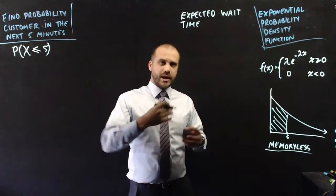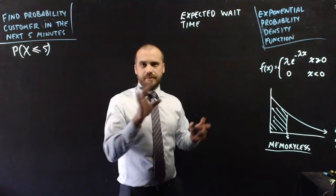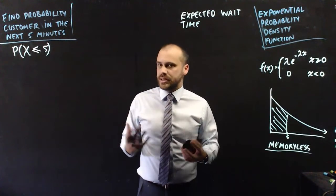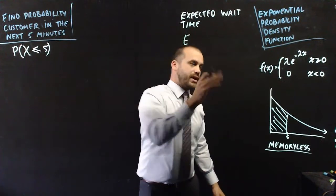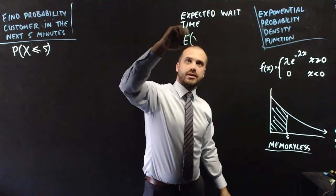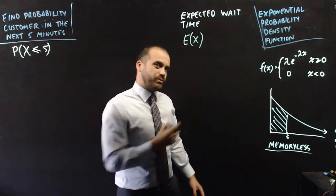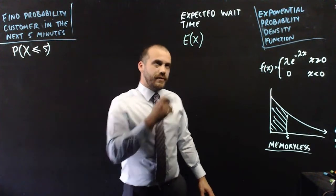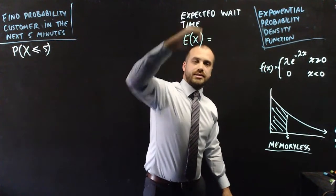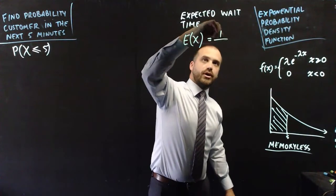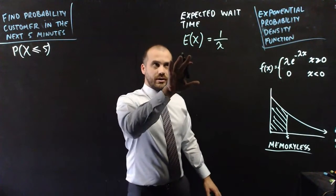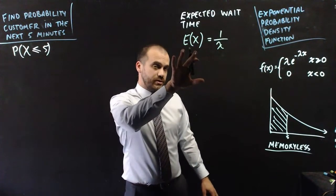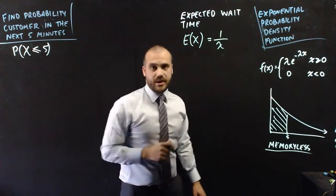All right. So you're in a shop and you think on average people come in every six minutes. That's your expected wait time. We can say that that's our expected value here. And you should have done expected values with probability density functions before. Now E of x is equal to one over lambda. Okay. Lambda isn't the expected value. Lambda is one over the expected value.